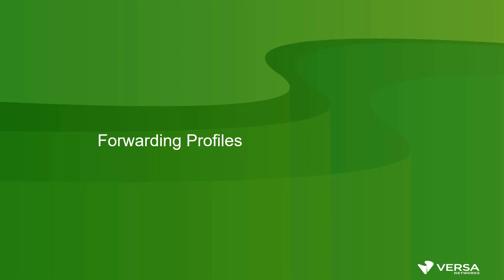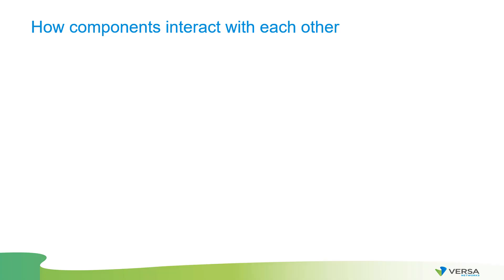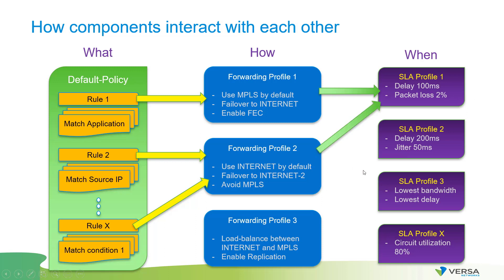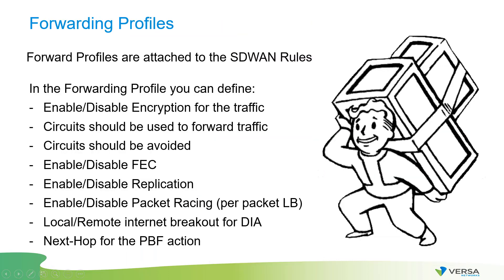Forwarding profiles answer the question of how we are steering the traffic, and they can reference SLA profiles to define when traffic should be steered a certain way. Forwarding profiles are attached to SD-WAN rules and allow you to define circuit priorities, whether traffic should be encrypted, replication for error correction, load balancing methods, which circuits to use for local internet breakout, and other advanced features.